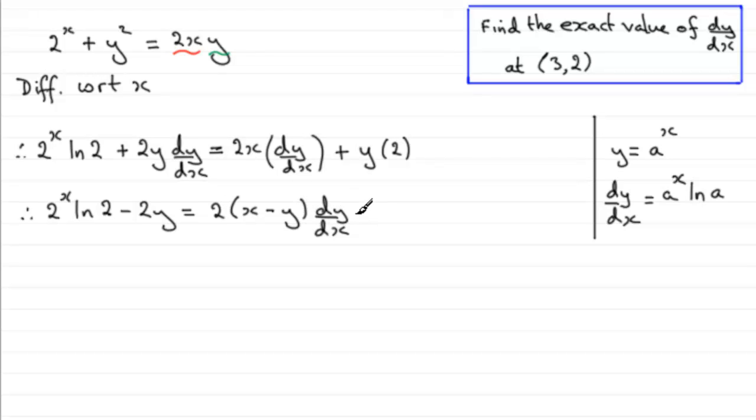So if I now divide through by 2 times x minus y, I get dy/dx equals 2 to the power x natural log of 2 minus 2y, all divided by 2 times x minus y. So that's the gradient in general.